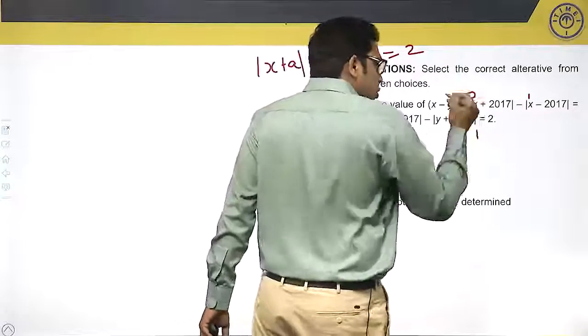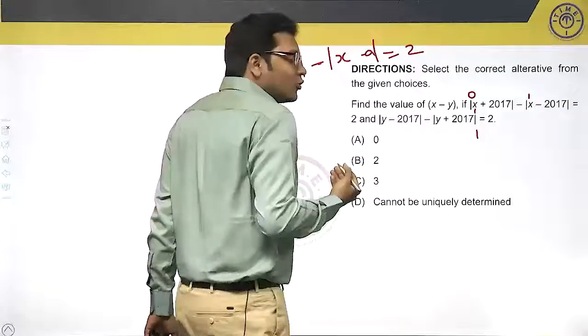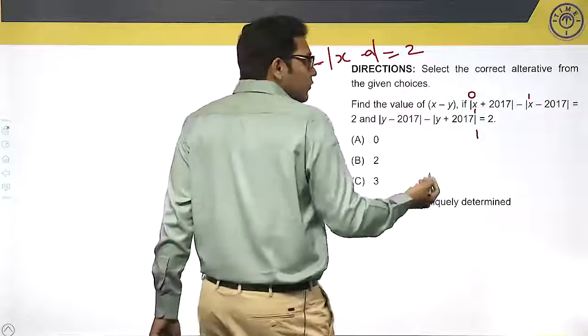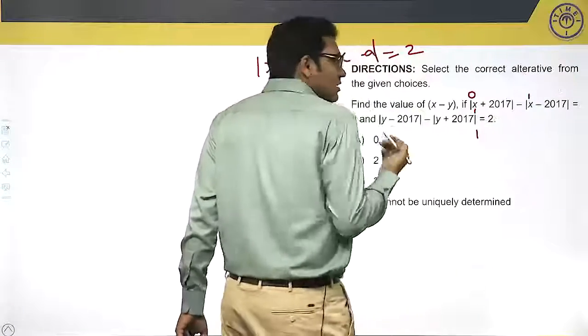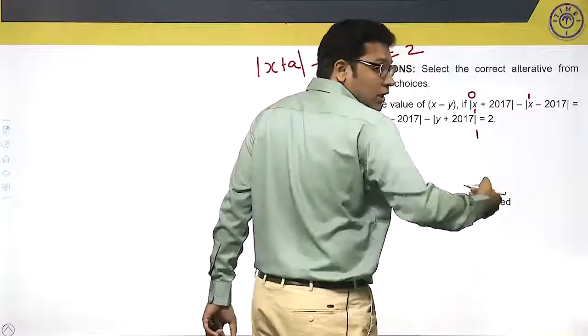If x equals 2, 2 + 2017 = 2019, and 2 - 2017 = -2015. So 2019 - 2015 = 4. The difference increases as we proceed from x equals 1, 2, 3.